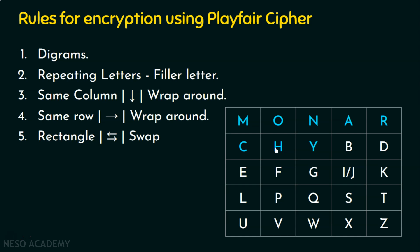Rule four: if the alphabets in the digram appear in the same row, we move right to generate the ciphertext. For example, with BD, if D is the last element, we wrap around — what comes next is C. So: next to D is C, next to H is Y, next to P is Q. Same row: move right. Same column: move down.